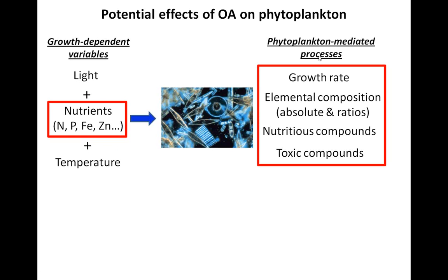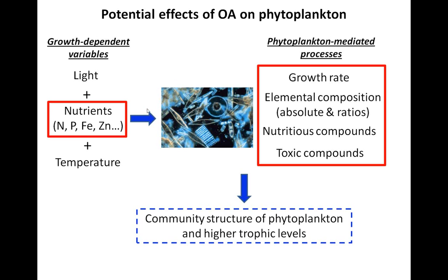When phytoplankton grow, there are a number of processes they mediate that I'll be talking about: the rate of growth of different species or taxa, the composition of these species, and elemental composition — meaning carbon fixation rates and the molar ratios of carbon, nitrogen, and phosphorus. Also the production of nutritious compounds, specifically polyunsaturated fatty acids, and toxic compounds such as harmful algal bloom-type compounds. The combination of these factors culminates in a community structure or nutritional structure of phytoplankton, and the key question is how will this change in future oceans and how will it affect higher trophic levels.